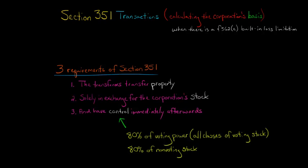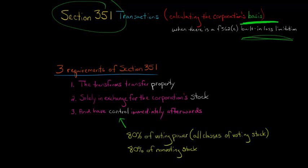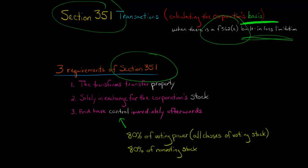In this video, we're going to discuss how to compute the corporation's basis in the assets received in a Section 351 transaction when the built-in loss limitation applies. Section 362E of the U.S. Tax Code provides a built-in loss limitation that basically says when you have a Section 351 transaction, you look at all the properties that are being transferred to the corporation in this tax-deferred transaction.